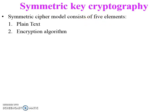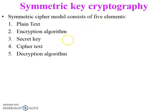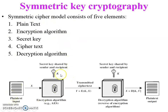The symmetric cipher model consists of five different elements: one is plain text, second one is encryption algorithm, third one is secret key, fourth one is cipher text, and fifth one is decryption algorithm. You must use all five elements to perform symmetric key cryptography.